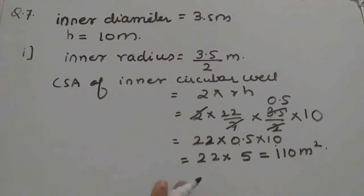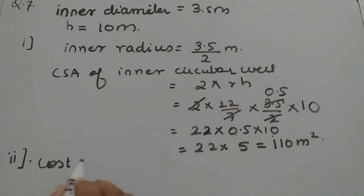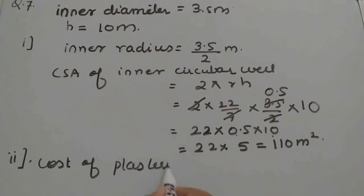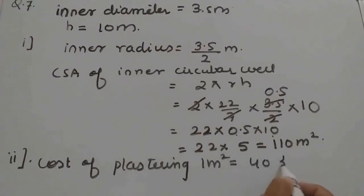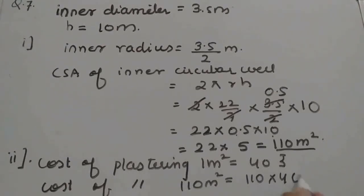This is the first part of the question. In the second part, cost of plastering this area is 40 rupees per meter square. So cost of plastering 1 meter square is 40 rupees. For 110 meter square, cost of plastering will be 110 into 40, which gives 4400 rupees.